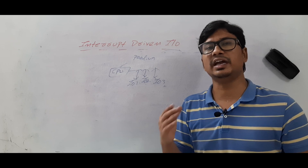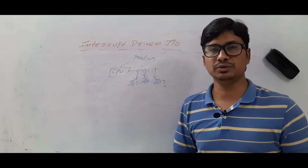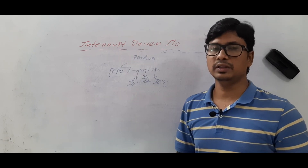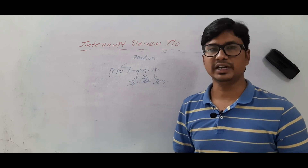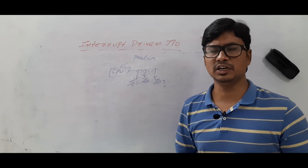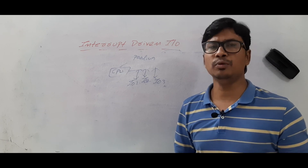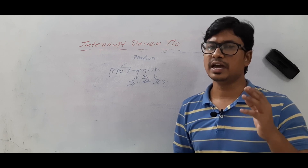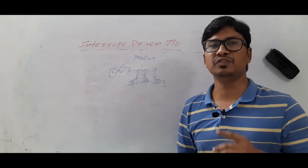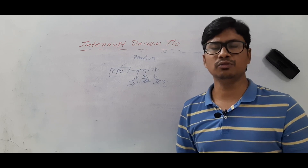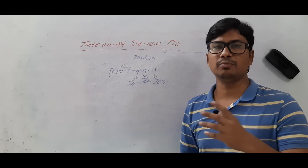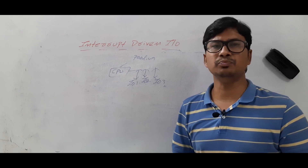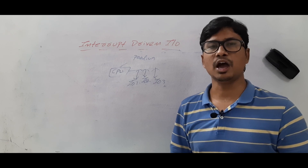In the next video we will discuss the hardware approaches: daisy chain and parallel methods of implementing priority-based interrupts. I hope you understood interrupt-driven IO. If you have any doubts, feel free to ask in the comments. Please like, share, and subscribe to the channel, and give your feedback — positive or suggestions for improvement. Thank you for watching, have a nice day.